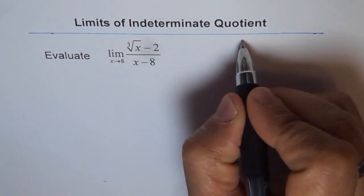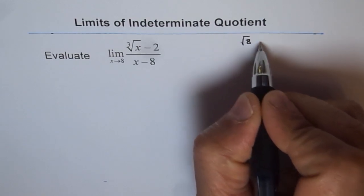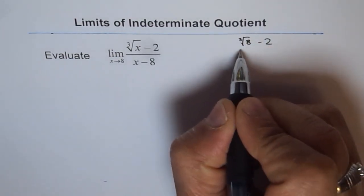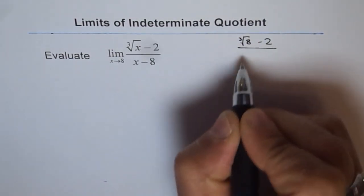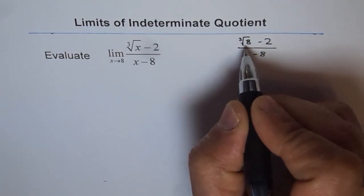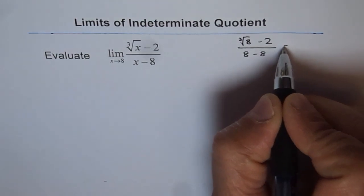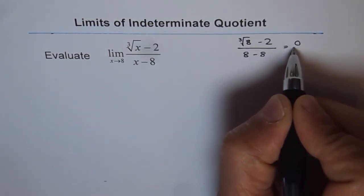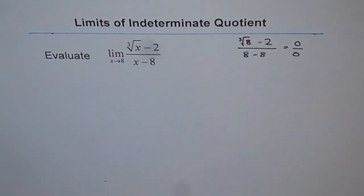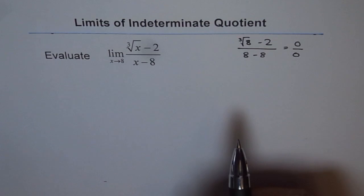We have cube root of 8 minus 2 over 8 minus 8. Cube root of 8 is 2, and 2 minus 2 is 0. So we do get 0 over 0. This is another example of indeterminate quotients.